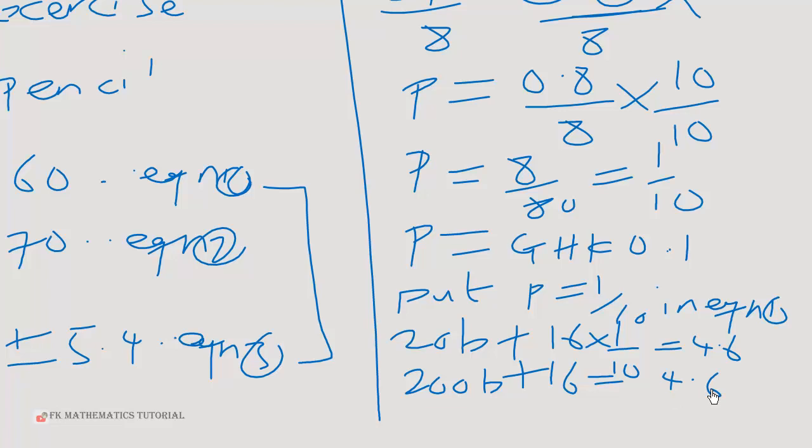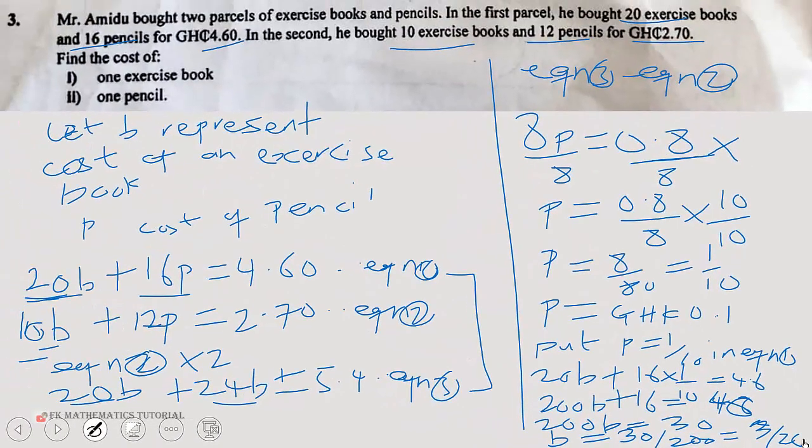So 200B is equal to 46. Not 4.6. So if you subtract 16 from both sides, you get 200B is equal to 30. So dividing through by 200, you will get B to be equal to 30 over 200, and that is equal to 3 over 20. So 3 over 20 is the same as 0.15.